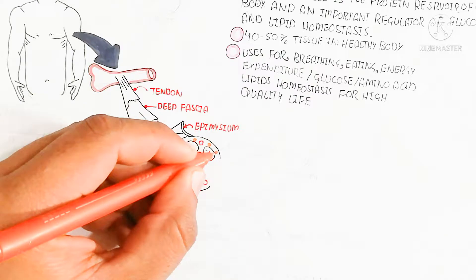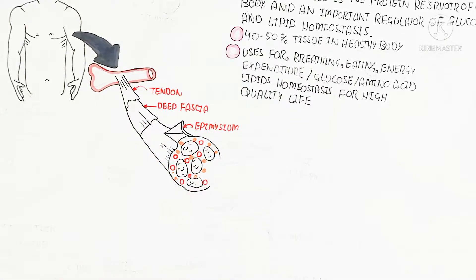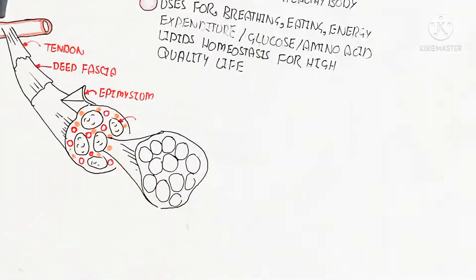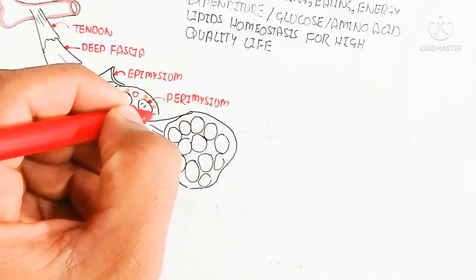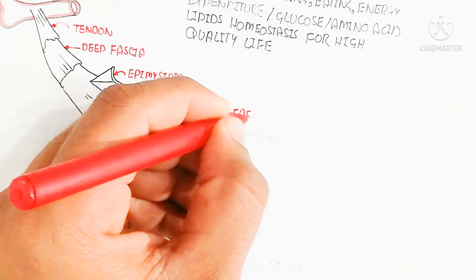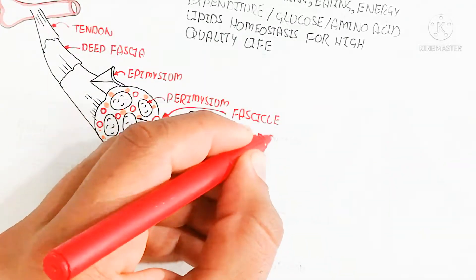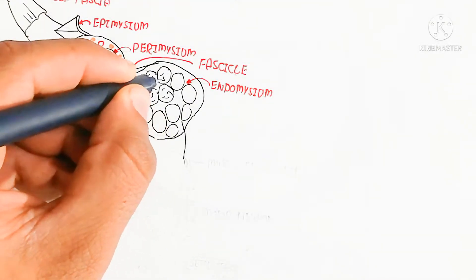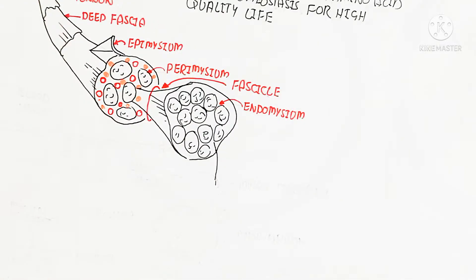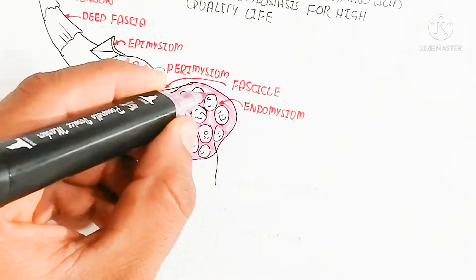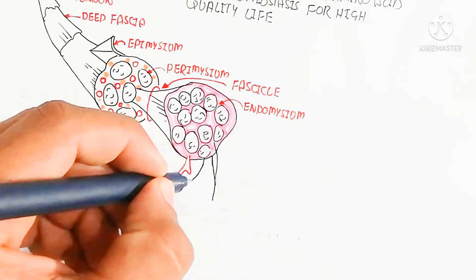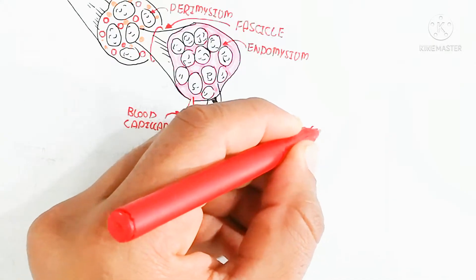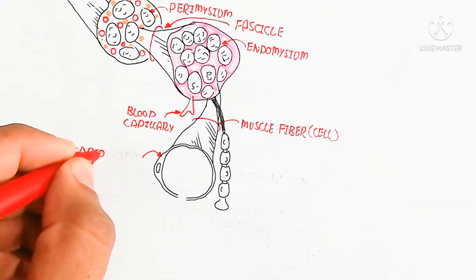Within the epimysium is the perimysium. This perimysium contains a fascicle. The fascicle basically contains endomysium. Endomysium surrounds the muscle fiber. Inside the muscle fiber is a cell — that is the cell of the skeletal muscle. It is also known as the myocyte, but the myocyte is the precursor of the muscle fiber. The mature form of the muscle cell is known as the muscle fiber. I am drawing the muscle fiber: this is the perimysium fascicle, which contains endomysium, and inside the endomysium are muscle fibers.